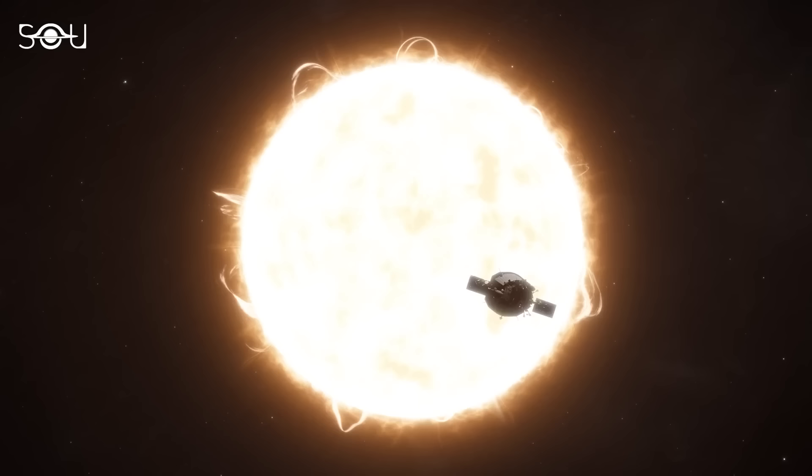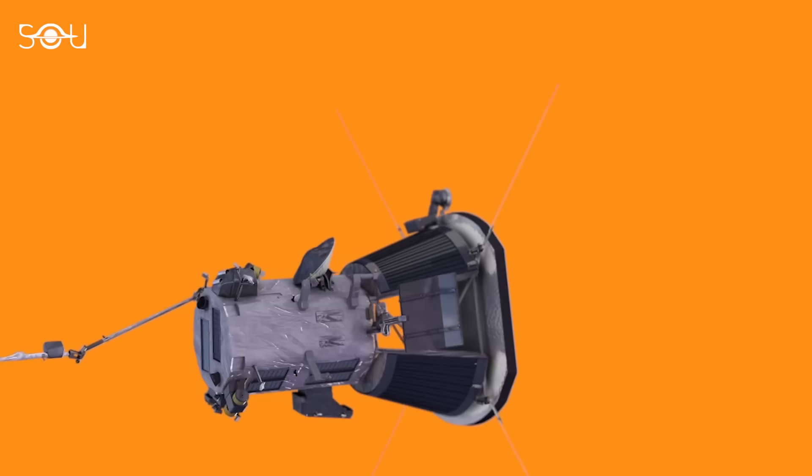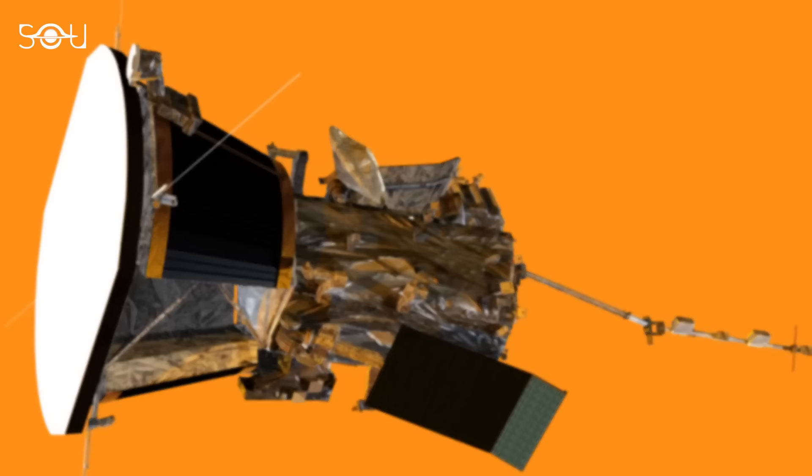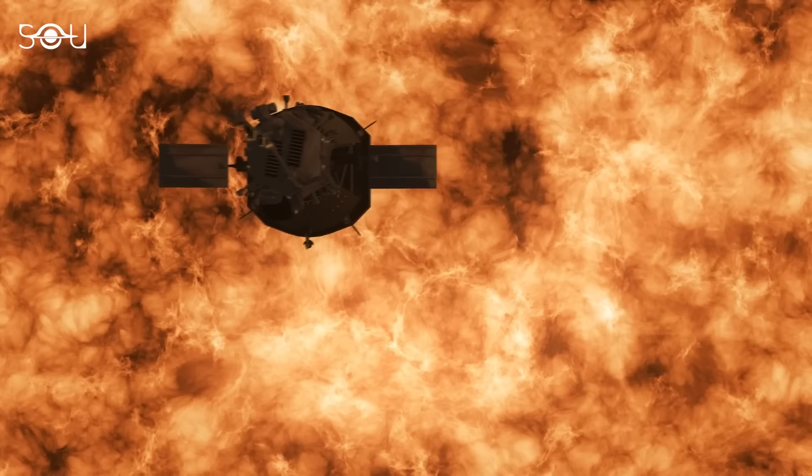Parker Solar Probe is not only studying the sun, but it is also being powered by it. However, as the solar panels get closer to the sun, they might get overheated. So, to keep things cool out there, the spacecraft circulates a single gallon of water through its solar arrays. The water absorbs heat as it passes behind the arrays and then radiates that heat into space as it flows into Parker's radiator.